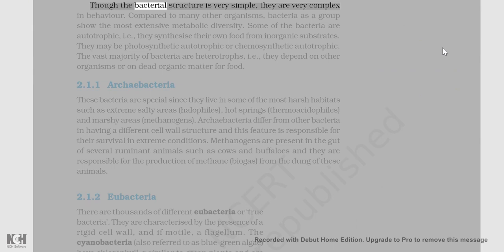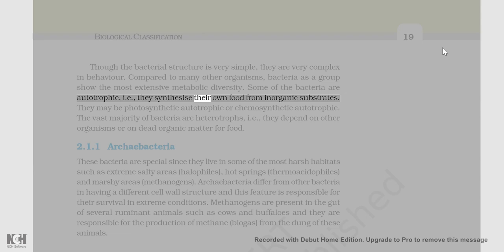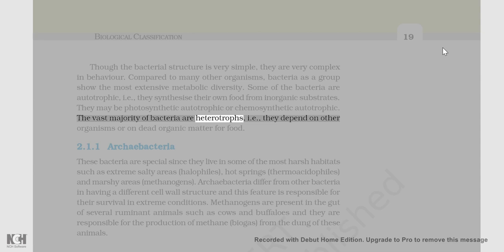Though the bacterial structure is very simple, they are very complex in behavior. Compared to many other organisms, bacteria as a group show the most extensive metabolic diversity. Some of the bacteria are autotrophic, i.e., they synthesize their own food from inorganic substrates — they may be photosynthetic autotrophic or chemosynthetic autotrophic. The vast majority of bacteria are heterotrophs, i.e., they depend on other organisms or on dead organic matter for food.